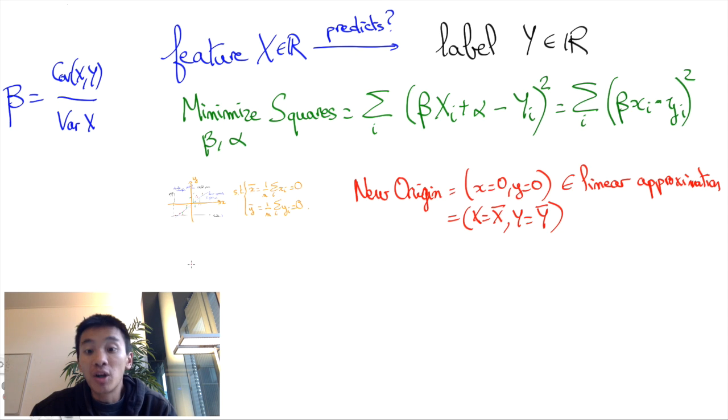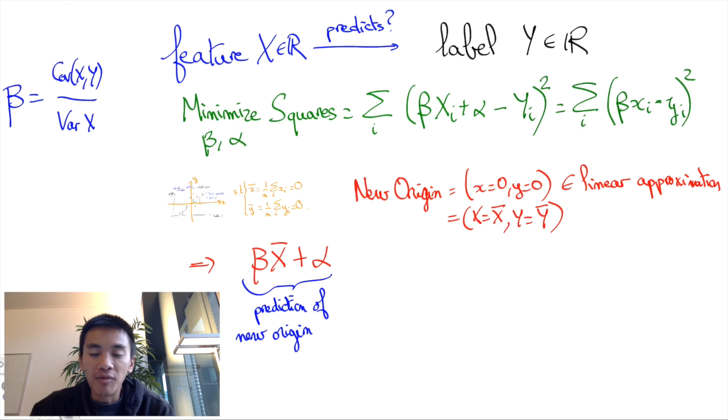The fact that this point, which is the average of the cloud of points, lies on the linear regression means that beta bar X plus alpha—that's the prediction of the linear approximation—is going to be exactly equal to bar Y, the average value of the Y_i's, of the capital Y_i's. And then we obtain the equation alpha equals bar Y minus beta bar X.